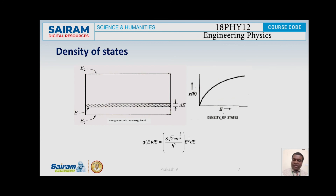Here, h is Planck's constant and m is the mass of the electron. Closely observing the equation, G(E) is directly proportional to E^(1/2). When we plot a graph of G(E) versus E, the curve obtained is a parabola, as shown in the graph. This is what describes the density of states. Thank you.